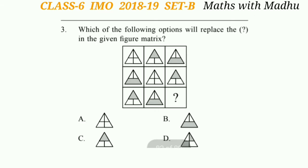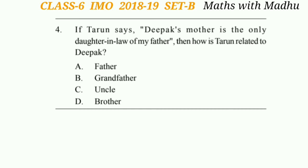Now question 3. Which of the following options will replace the question mark in the given figure matrix? Look at the first row — the third figure became the first figure in the second row, the first figure became the second figure, and the second figure became the third figure. Similarly in the third row, the third figure of the second row became the first figure of the third row, and the first figure of the second row became the second figure of the third row. So the third figure of the third row will be the second figure of the second row. The answer will be option A.